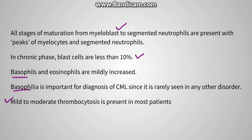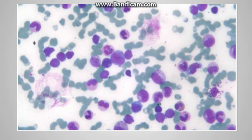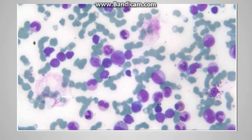For platelets, they are slightly increased in number. In the peripheral blood picture, we can see segmented neutrophils, promyelocytes, metamyelocytes, and myelocytes — all ranges of maturation are seen — and the blast percentage is less than 10%.